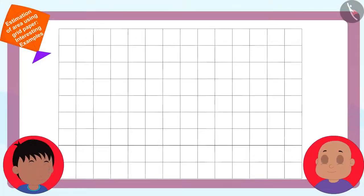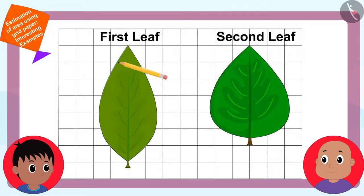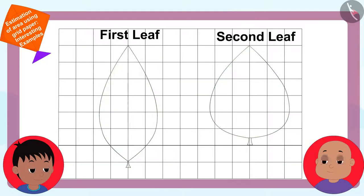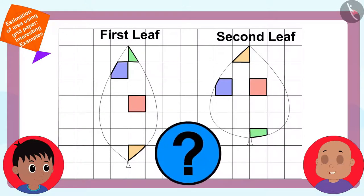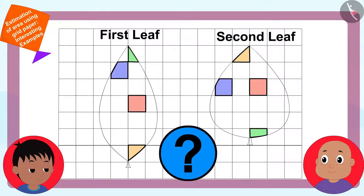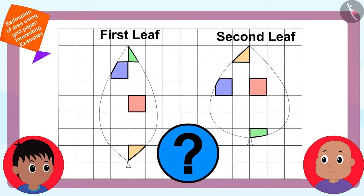Raju created outlines of both the leaves using a pencil on a grid paper. Bablu pointed out that the areas enclosed by the outlines had some full squares, some half squares, some more than half, and even some less than half squares — and asked how they would find the area.